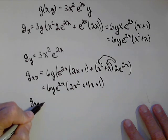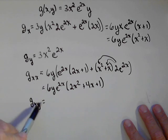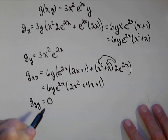G sub yy, well, there's no y term in G sub y, so it's a constant as far as we're concerned, so its second order partial is 0.